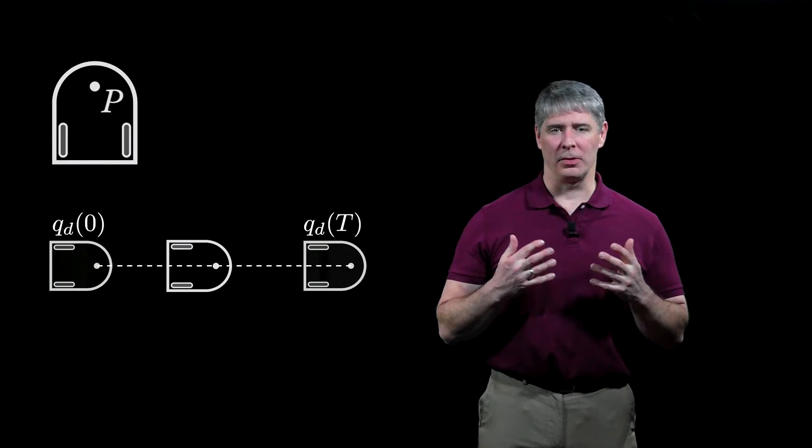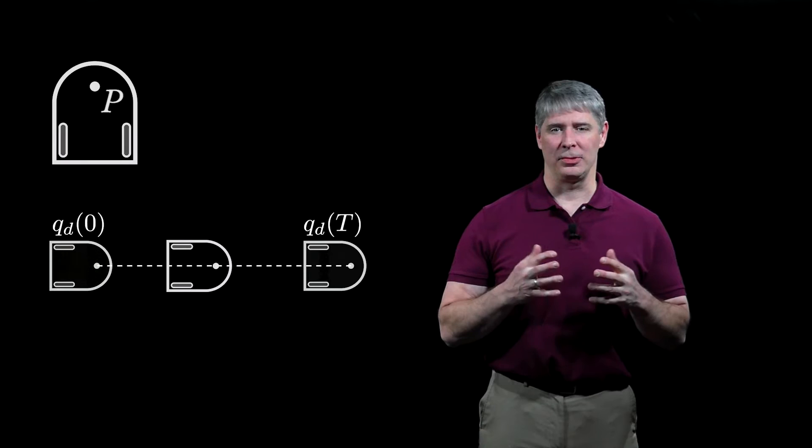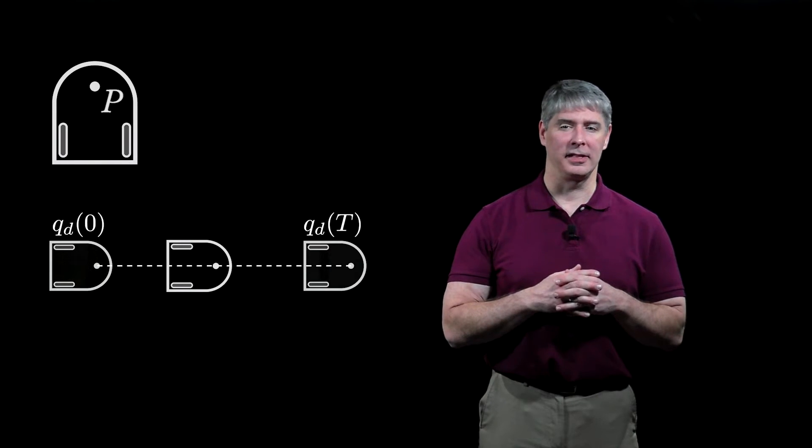Therefore, even though the robot only follows the trajectory of the point P, this motion will often tend to align the robot's orientation to the desired orientation.